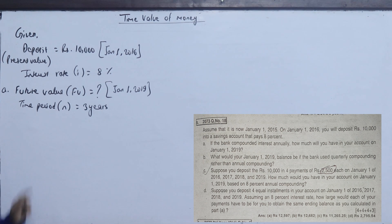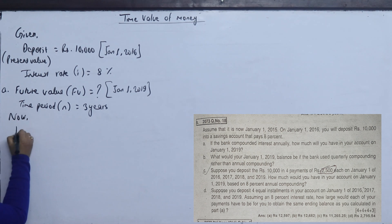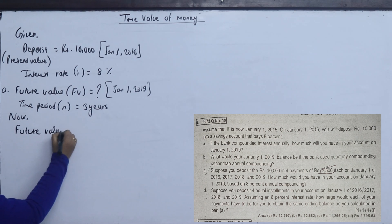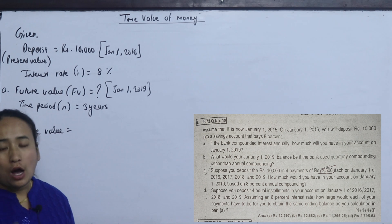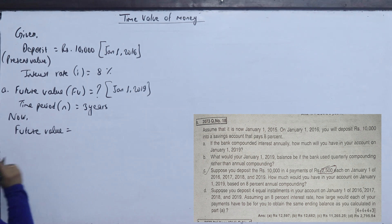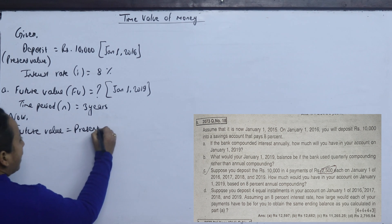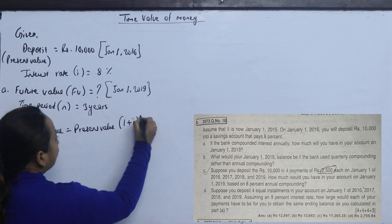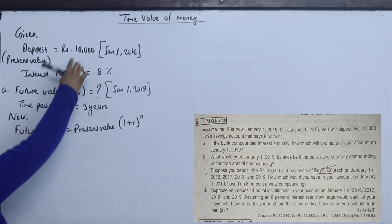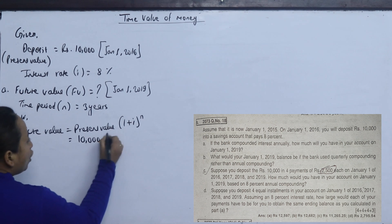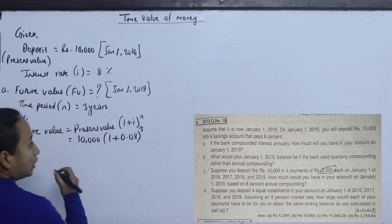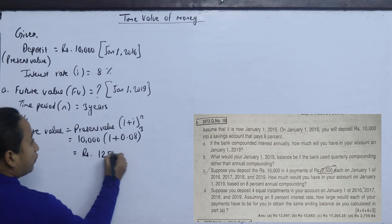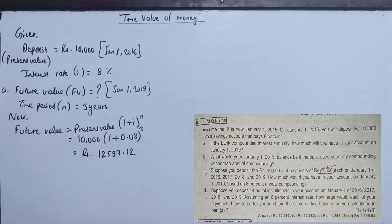The time period is 3 years. Now, the future value should be calculated. This deposit is per year on a lump-sum basis. In lump-sum basis, the future value formula is: Present value × (1 + i) to the power n. The present value is 10,000, i is 0.08 (8%), and n is 3 years. The answer is 12,597.12.